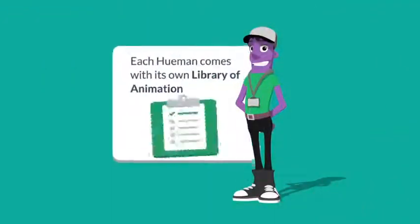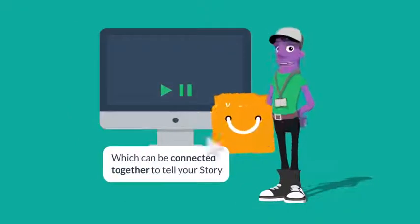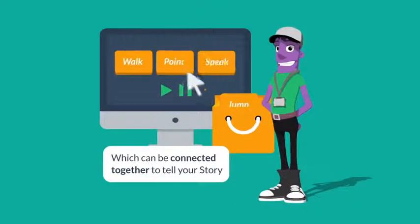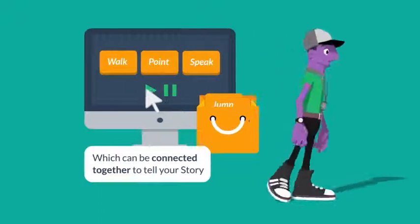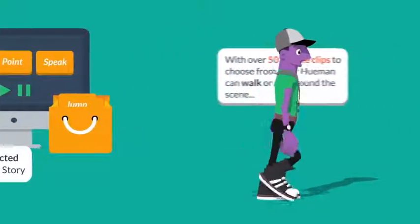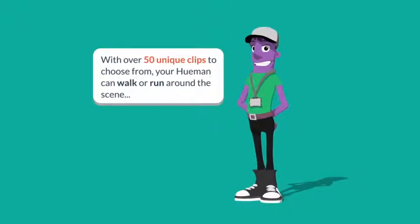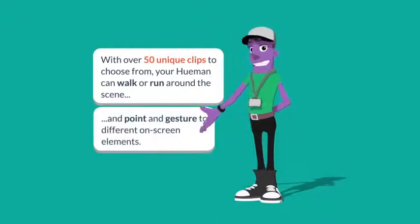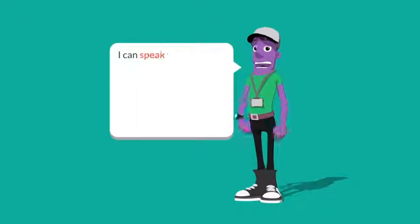Each human comes with its own library of animation, which can be connected together to tell your story. With over 50 unique clips to choose from, your human can walk or run around the scene and point and gesture to different on-screen elements.